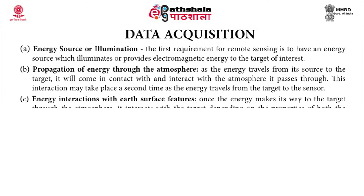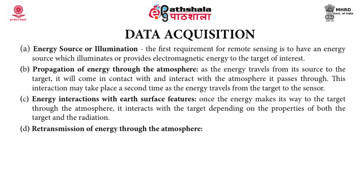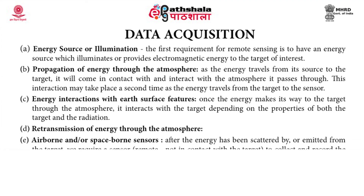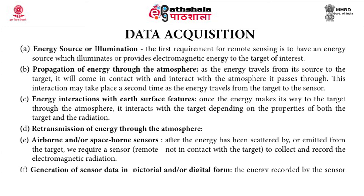As the energy travels from the source to the target, it will come in contact with and interact with the atmosphere it passes through. This interaction may take place again when the energy travels back from the target to the sensor. The third step is interaction with Earth's surface features — once the energy makes its way to the target through the atmosphere, it interacts with the target depending on the properties of both the target and the radiations. The fourth step is retransmission of energy through the atmosphere, which involves a similar process as in the second step.